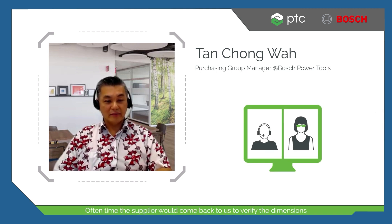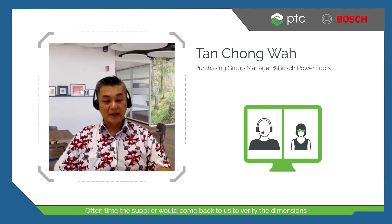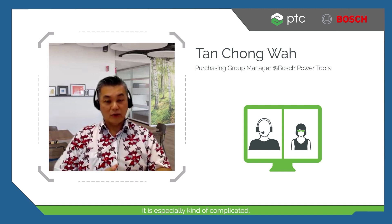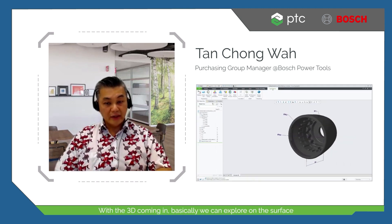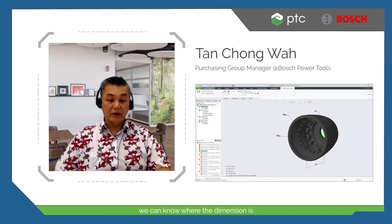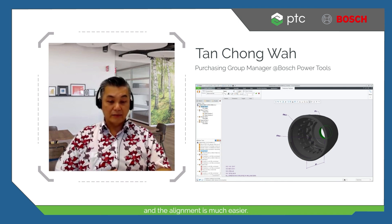Often, suppliers come back to us to verify dimensions because what is plotted in 2D is unclear, especially for complicated parts. With the 3D model, we can explore the surface so that the dimensions and alignment are much easier to understand.